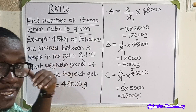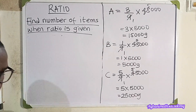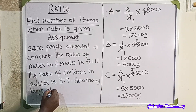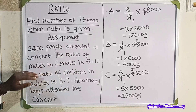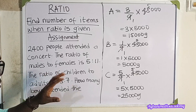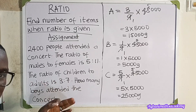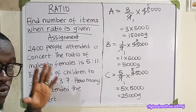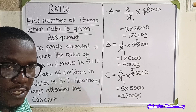Now I'm going to write the assignment for this section, which will bring us to the end of today's class. 2,400 people attended a concert. The ratio of males to females is 5 is to 11. The ratio of children to adults is 3 is to 7. How many boys attended the concert? This is a little bit technical, unlike the first two assignments, so read through it again and again to understand the problem. I hope you enjoyed today's lesson.